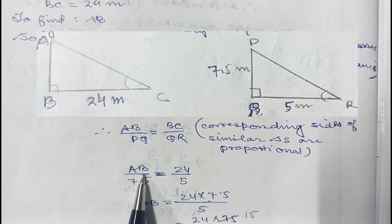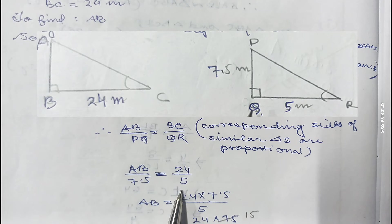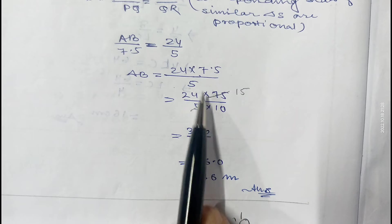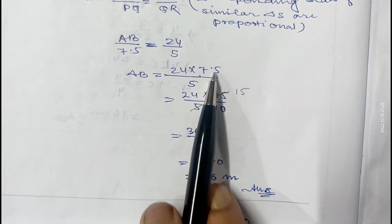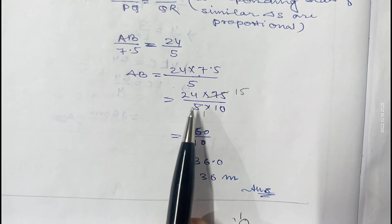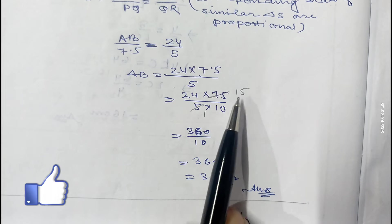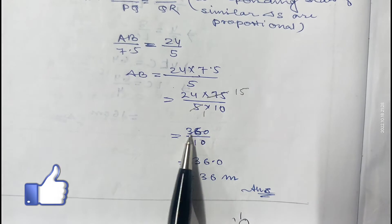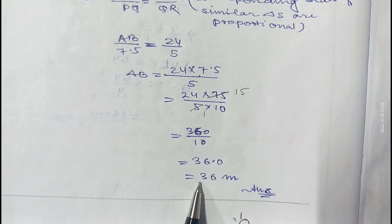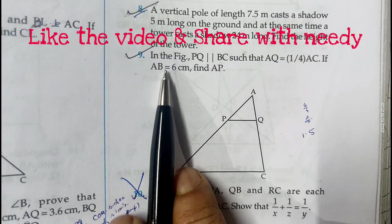AB is unknown, PQ is 7.5, BC is 24, and QR is 5. So AB equals 24 multiplied by 7.5 divided by 5. Writing 7.5 as 75 over 10, and simplifying: 24 times 15 divided by 10 equals 360 divided by 10, which equals 36. Therefore the required height of the tower is 36 meters.